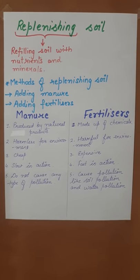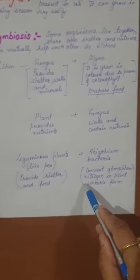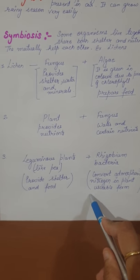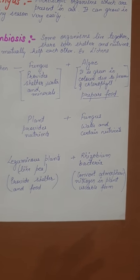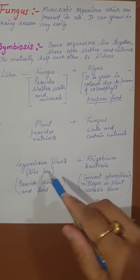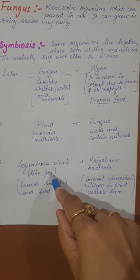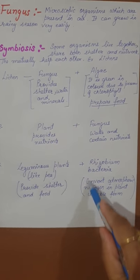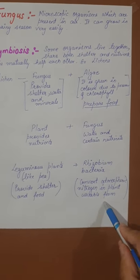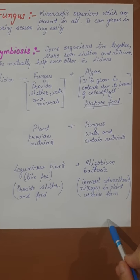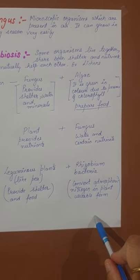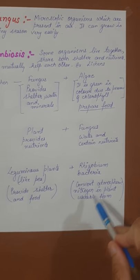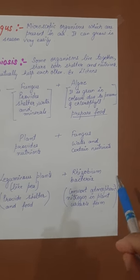The third method is leguminous plants, which I have already explained. This is also a very good way to replenish soil. After growing one crop, suppose you have grown wheat — once done with wheat, start growing pea plants. When you grow pea plants, rhizobium bacteria absorb nitrogen from the atmosphere and fix it into the soil, which refills the soil and makes it very good.